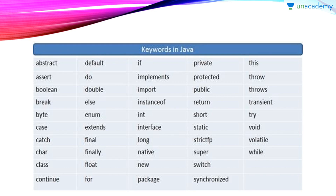There are total 53 keywords but I have mentioned here only 48. The 5 keywords that I have not mentioned are: true, false, null, goto, and const. True, false, and null can be used as constants also, so they don't treat as true keywords. But goto and const are not used these days in Java — they are used in C and C++.